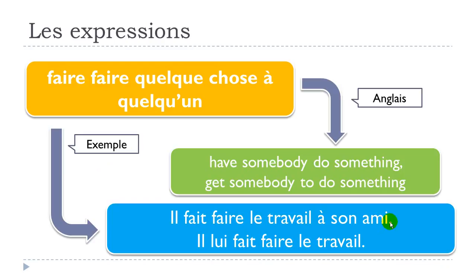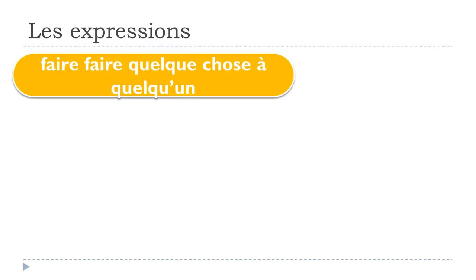The example sentence is: 'il fait faire le travail à son ami.' As you can see, the first 'faire' is conjugated — here in the present form 'il fait' — and then the second verb 'faire' stays at the infinitive. The 'à son ami' part is the complément d'objet indirect and can be replaced by the pronoun 'lui': 'il lui fait faire le travail.'